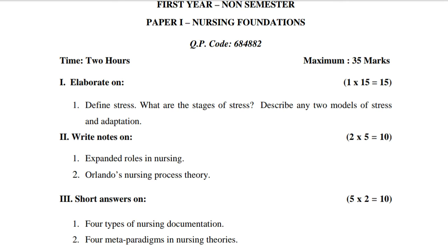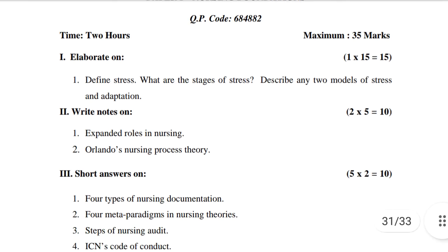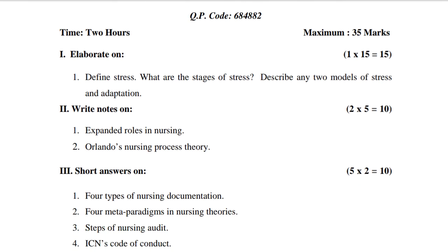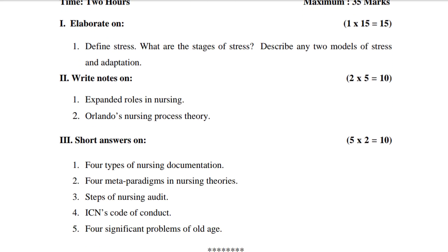First question: Define stress and what are the stages of stress? Describe any two models of stress — 15 marks. Next question: Expanded role in nursing — 5 marks. Next: Nursing process theory — 10 marks. Short answer questions carry two marks each, totaling 10 marks. First short answer question: Four types of nursing documentation.